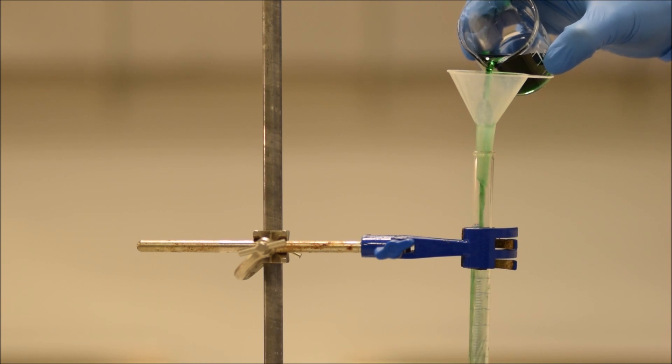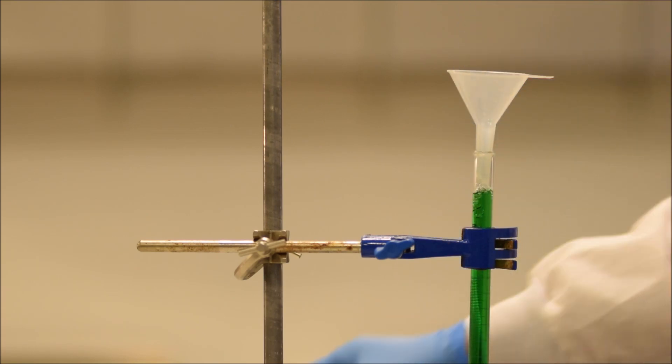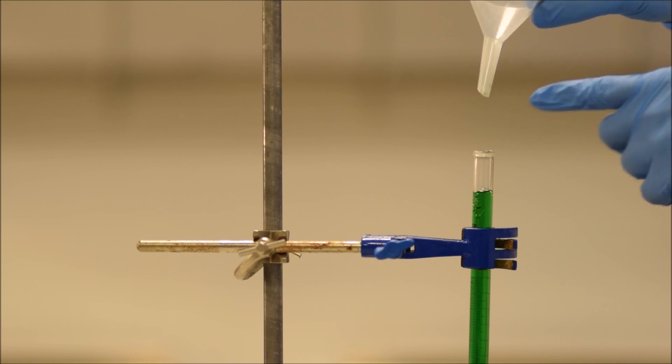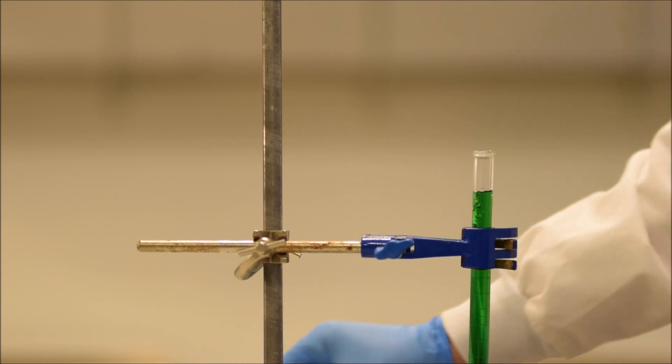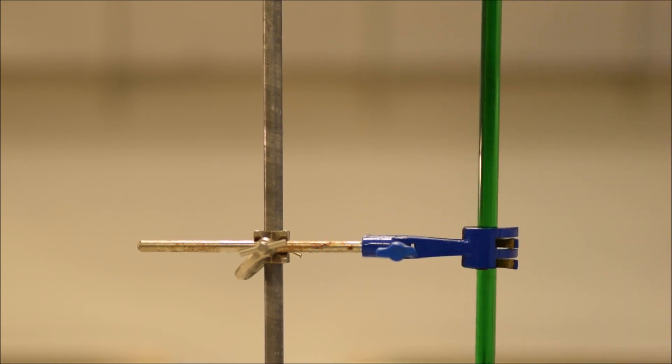Pour it in until you have it full, past the mark of zero, so nearly all the way up to the top, and you'll see why in a second, and then take the funnel out. And you've got to remember to take the funnel out, because if you don't and you're measuring precise volumes, that little drop can fall down and change your result. And that can be a bit of a disaster, because then you've just got to start your measurement all over again.